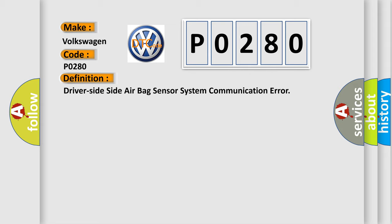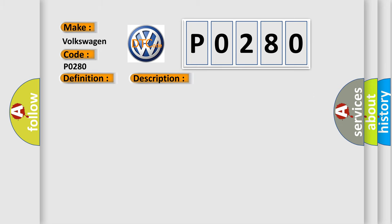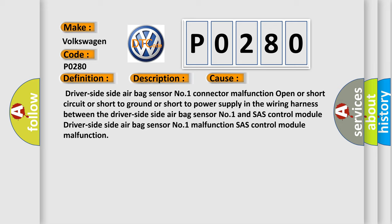Here is a short description of this DTC code. Warning: detection conditions are for understanding the DTC outline before performing an inspection. Performing an inspection according to only the detection conditions may cause injury due to an operating error, or damage the system. Always follow the inspection procedure. A wiring harness malfunction between the driver-side airbag sensor number one and the chassis control module, or driver-side airbag sensor number one itself, has a malfunction. This diagnostic error occurs most often due to an open or short circuit, short to ground, or short to power supply in the wiring harness, driver-side airbag sensor number one malfunction, or chassis control module malfunction.